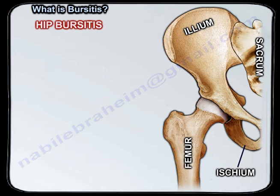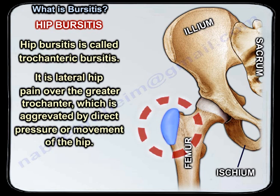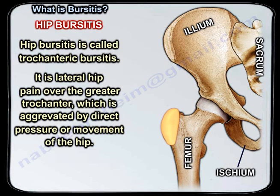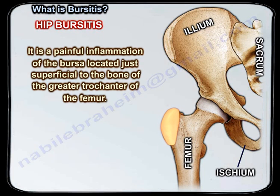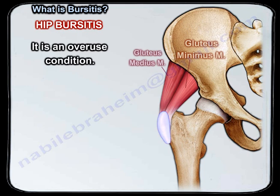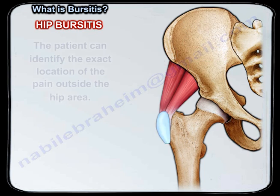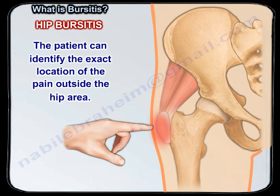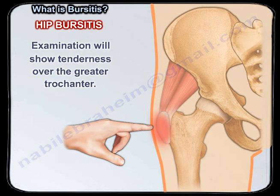Hip bursitis is called trochanteric bursitis. It is lateral hip pain over the greater trochanter, which is aggravated by direct pressure or movement of the hip. It is a painful inflammation of the bursa located just superficial to the bone of the greater trochanter of the femur. It is an overuse condition, and the patient can identify the exact location of the pain outside the hip area.